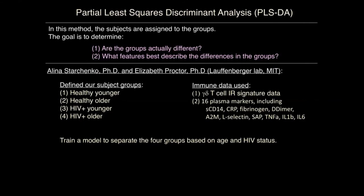We can't call these cells exhausted just based on the fact that they express an exhaustion marker. We went back from our in vitro system to the patient data, combining our inhibitory receptor signature data with measurement of 16 markers of inflammation and cardiovascular disease in subject plasma. Remember that plasma biomarkers of inflammation track with cardiac events and other comorbidities of age in HIV-positive patients. We collaborated with Lauffenburger's lab at MIT. Two postdocs — Olena Strachanka and Elizabeth Proctor — ran PLSDA, partial least squares discriminant analysis, on our dataset. With PLSDA, just like with Citrus, you tell the algorithm which subject is in which group — in our case, four groups: healthy younger, healthy older, HIV younger, and HIV older. The goal is to determine if groups are actually different and which parameters define those differences.